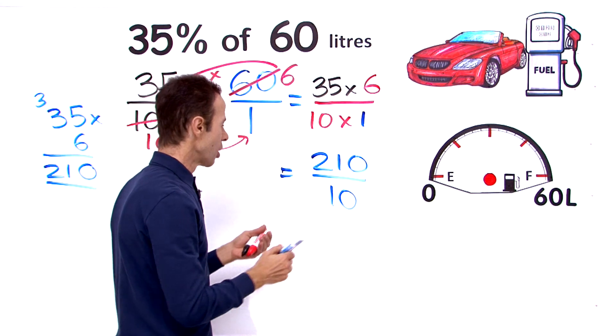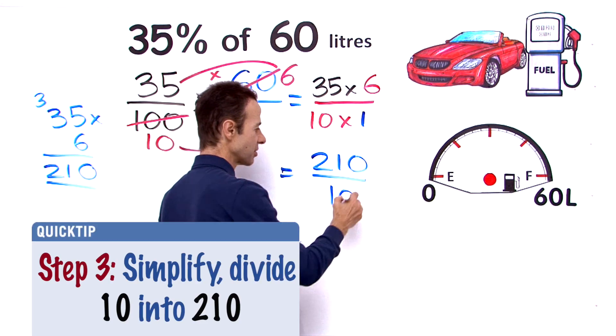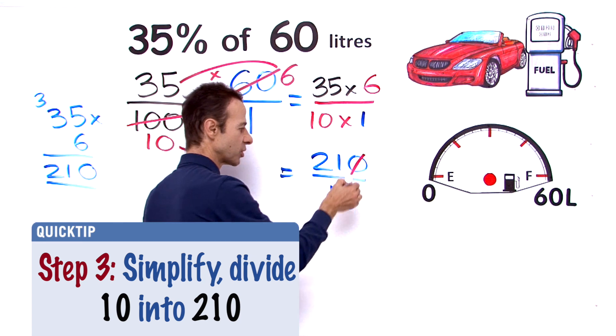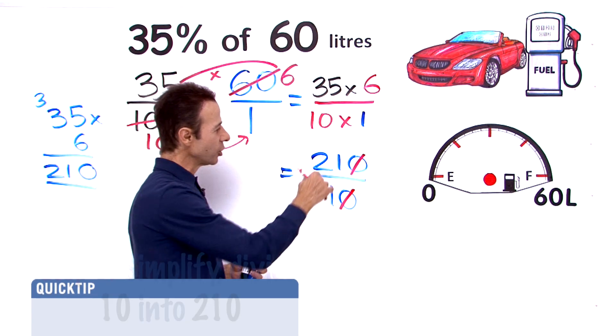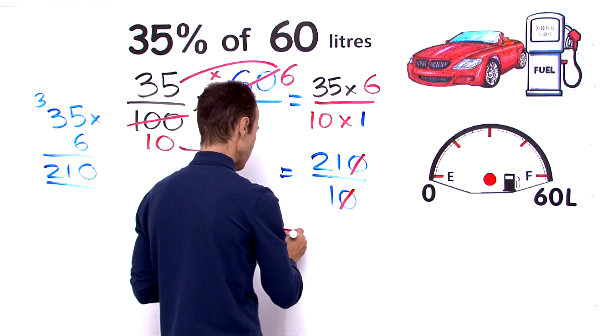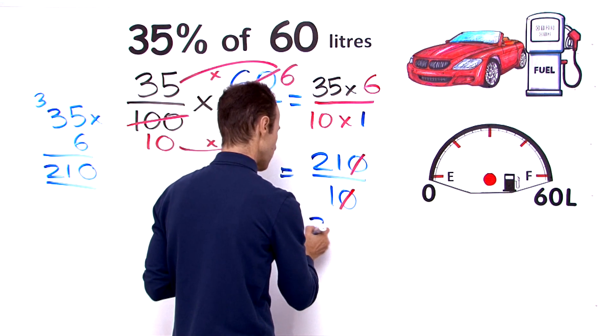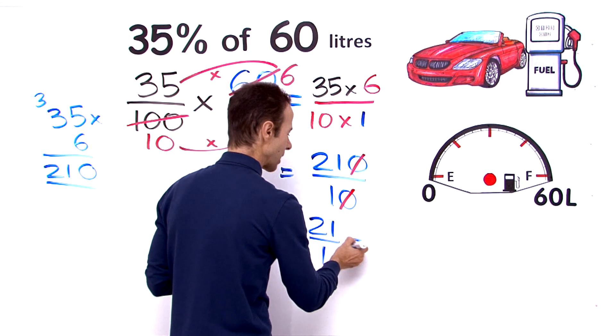What I like to do is cancel the zeros. If you've got a 0 on the top and 0 on the bottom, it's like dividing top and bottom by 10. It's the same thing. We're left with 21 on 1, so that equals 21 on 1, and that is the same as just 21.